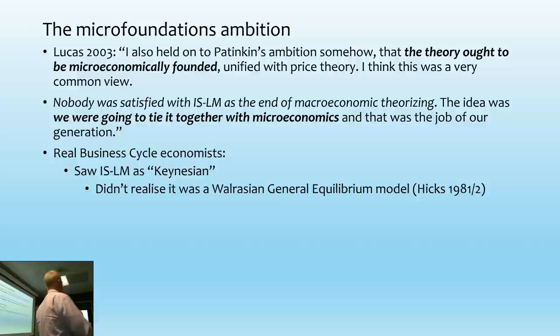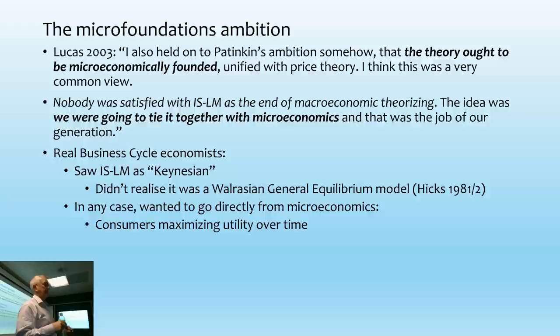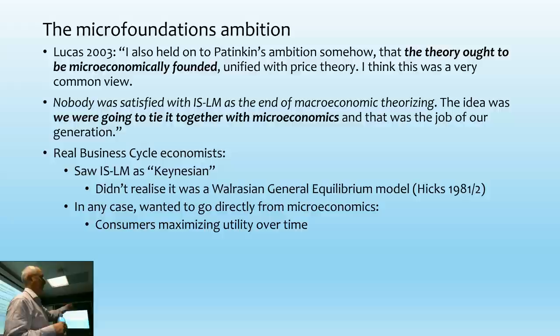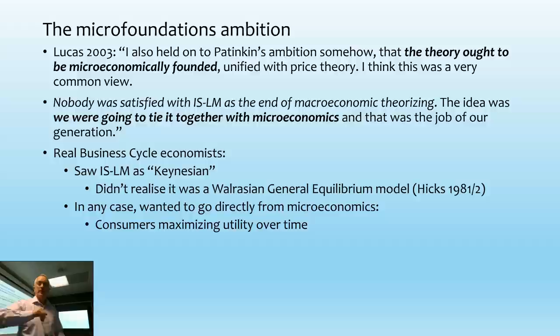If you read Hicks, he actually wrote the model before he read Keynes — so it's not really a Keynesian model. They wanted to go straight from micro to macro: the idea was to start with consumers maximizing utility, but rather than maximizing given current income and current prices, they wanted maximizing utility over time. The orientation shifted from multiple commodities — which was the approach of computable general equilibrium models in the 60s, 70s, and 80s, which still exist but are no longer used for forecasting — to something much simpler.